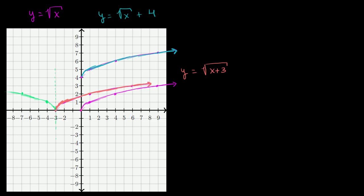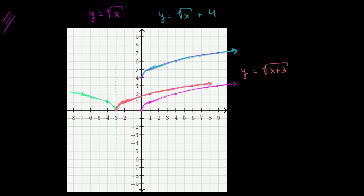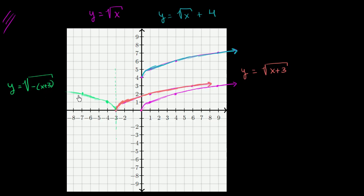This green function would be y equals the square root of the negative of x plus 3. What we've done is flipped what happens under the radical. In order to get a positive value under the radical, x plus 3 has to be negative, and the only way x plus 3 is non-positive is if x is less than negative 3.